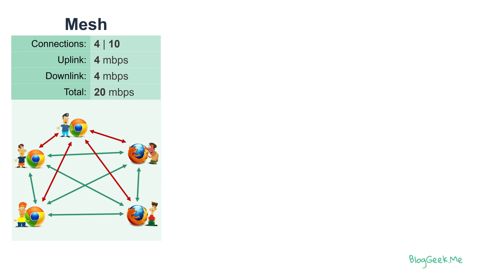The first and most naive approach is to use a Mesh network. In Mesh, all participants are directly connected to all other participants in peer-to-peer connections. In this case we've got five participants, each one has four connections to all the rest, for a total of 10 connections.